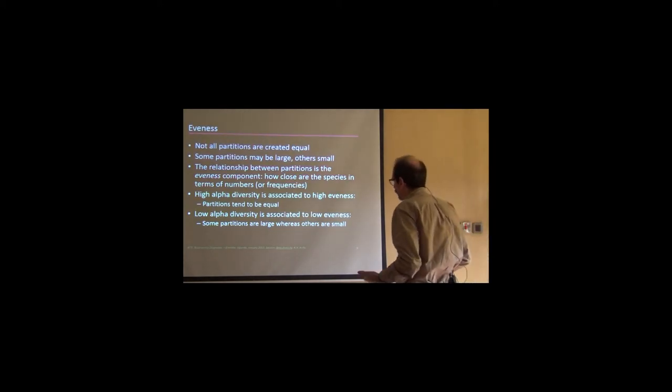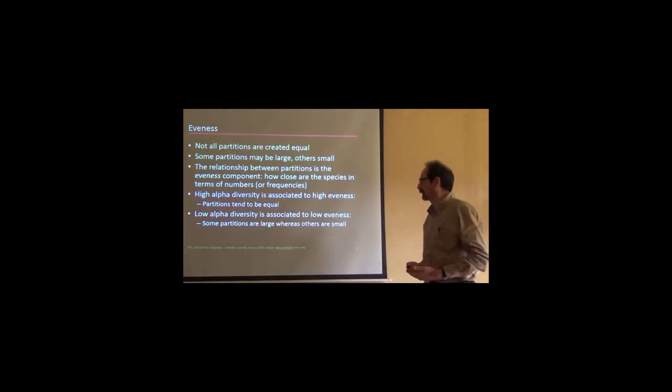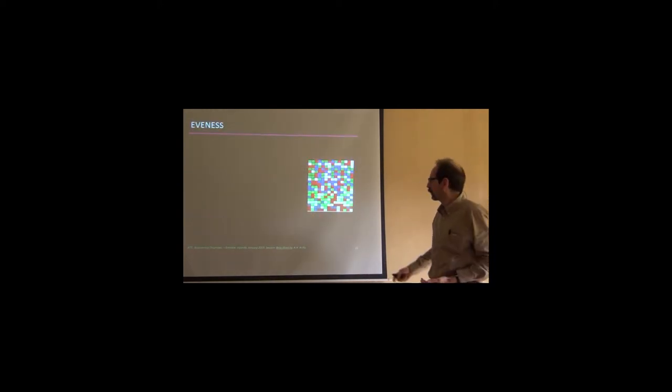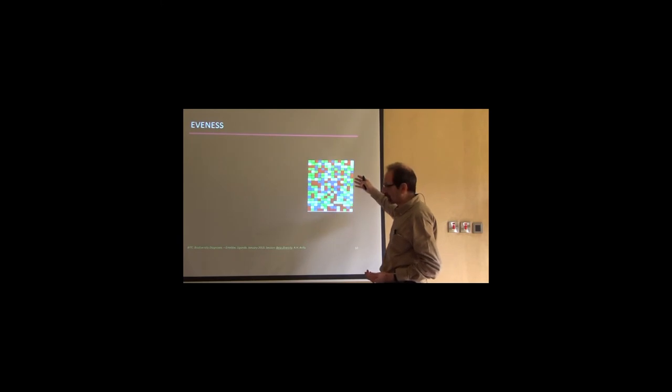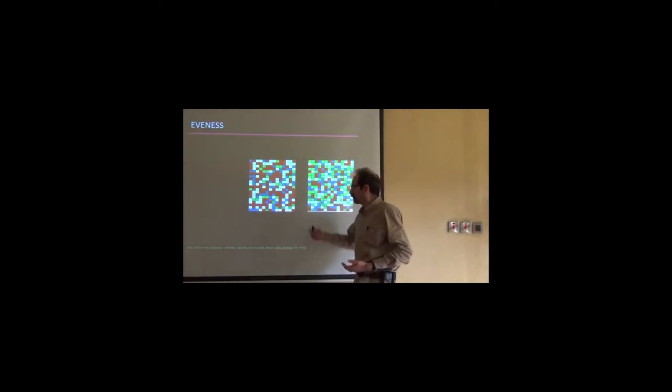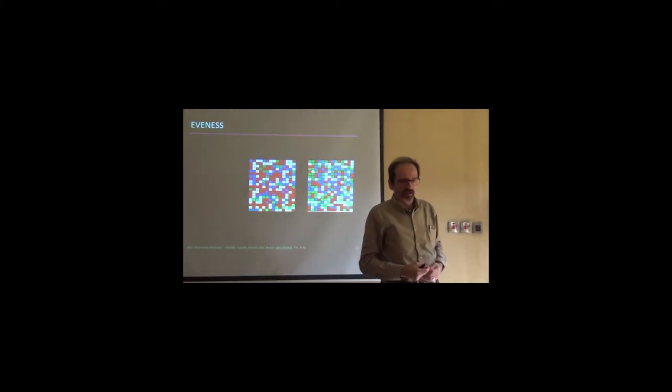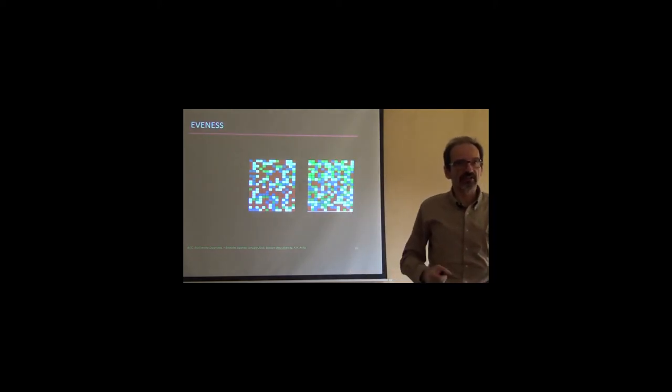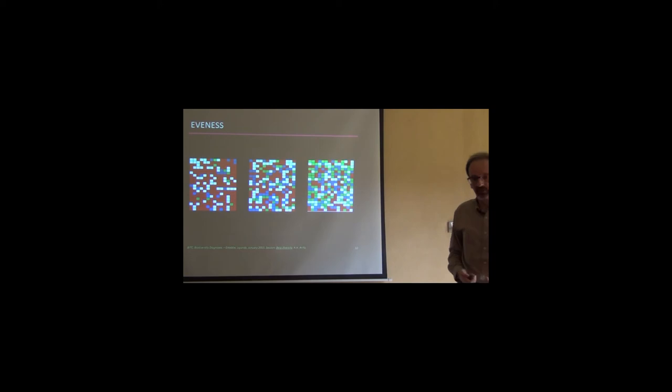So increasing richness means partitioning the same space into more components. For instance, here we have three species: white, red, and blue. And therefore the number of individuals into each class will reduce accordingly. And we have here four species. We have introduced the green, and again, the number of classes has increased, and the number of individuals per class has diminished. However, the proportions between classes has remained constant. So richness increases towards the right.